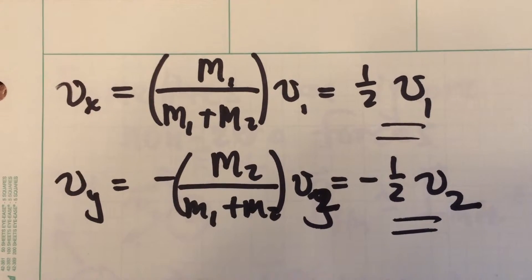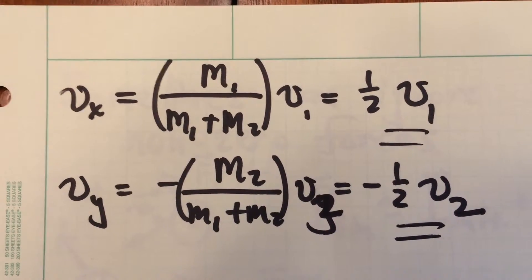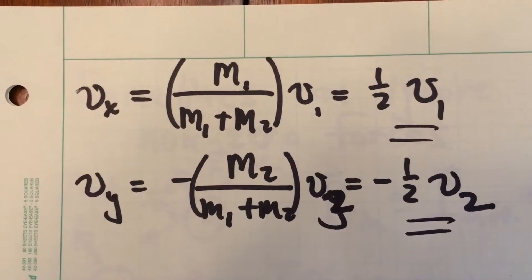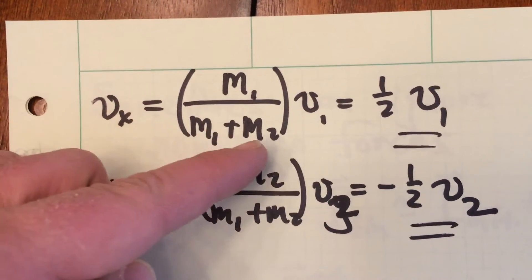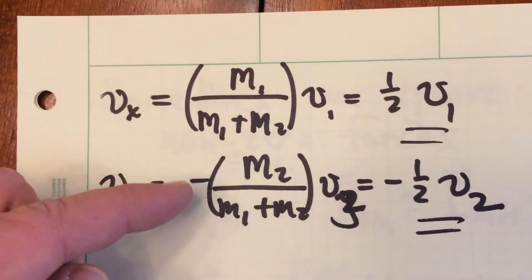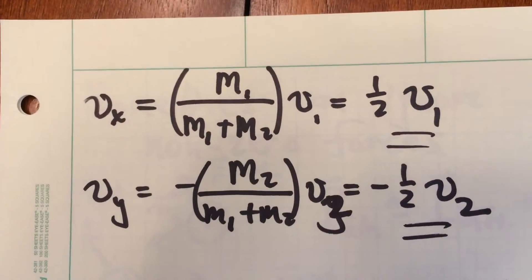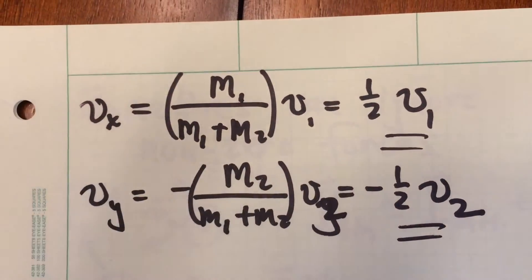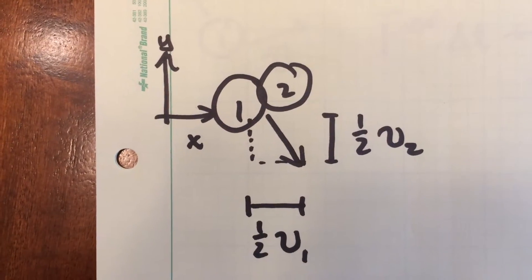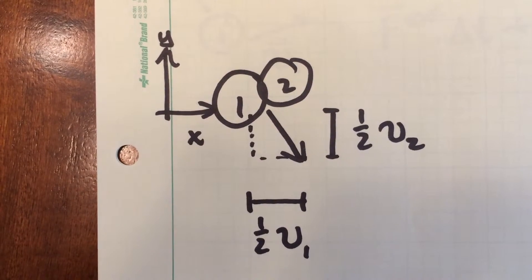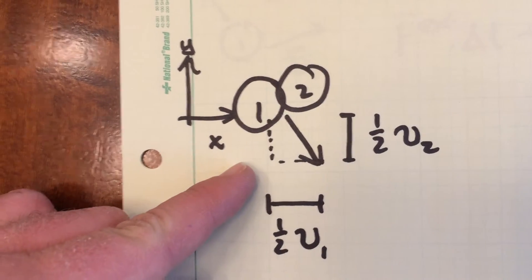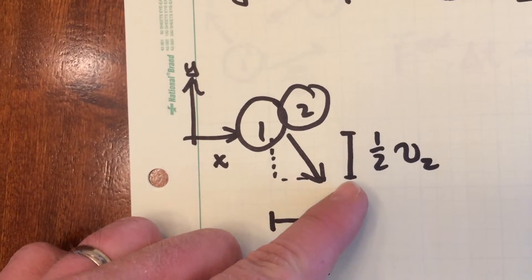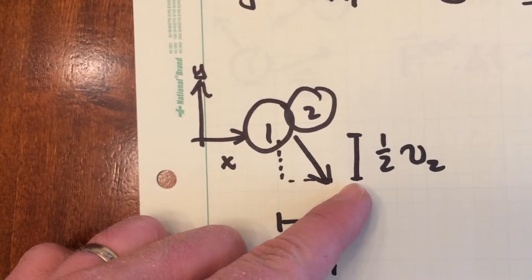The x and y components of the final velocity vector are now determined. Incorporating the assumption that m1 equals m2, we find m1 over m1 plus m2 is just one half, and the same for the y expression. So the final velocity vector has x-component one half v1 and y-component one half v2.